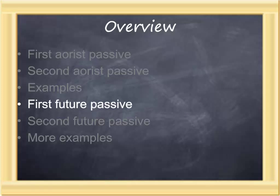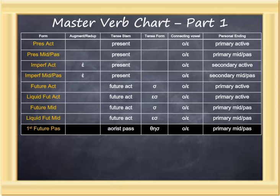The future passive. Previously, when we learned the future, we learned the future active and middle based on the future active stem. The future passive is based on the aorist passive stem. But notice there is no augment — it's a future tense, and past tenses get augments. Characteristic of the aorist passive is the tense formative theta-eta-sigma. When a theta-eta-sigma is followed by an omicron or epsilon plus a primary middle passive ending, then one has a first future passive.